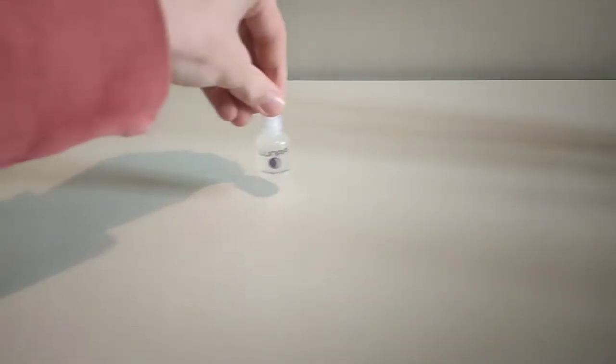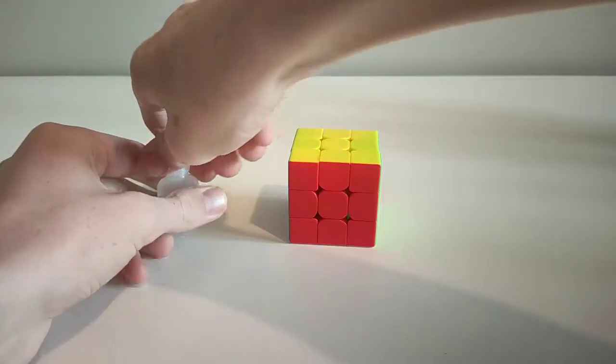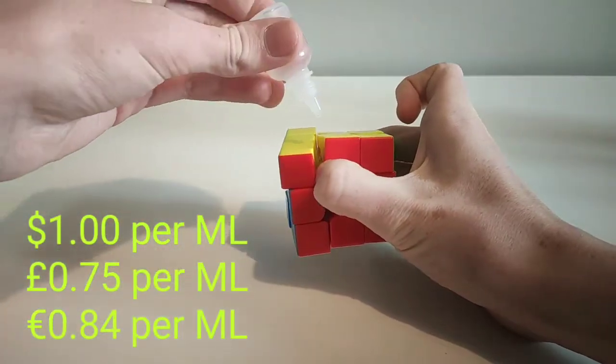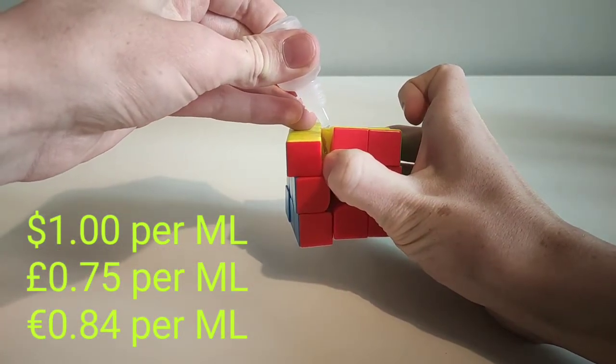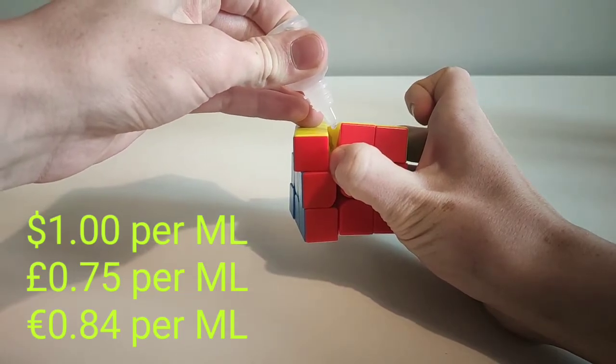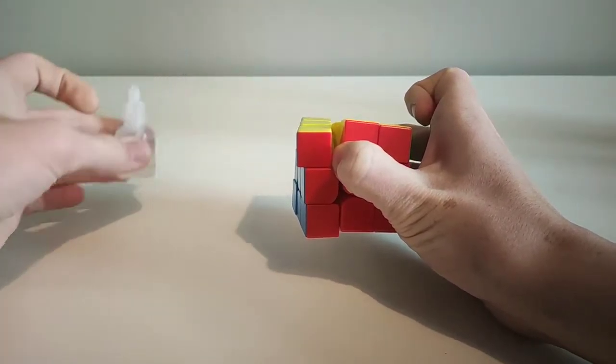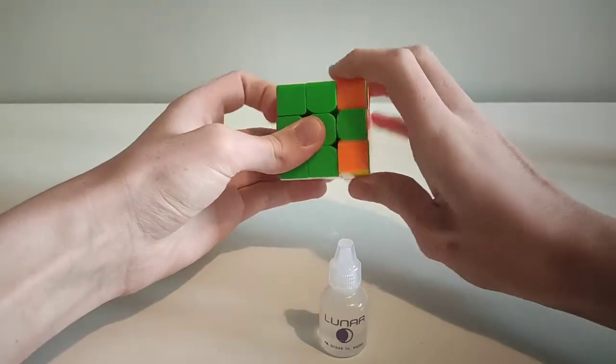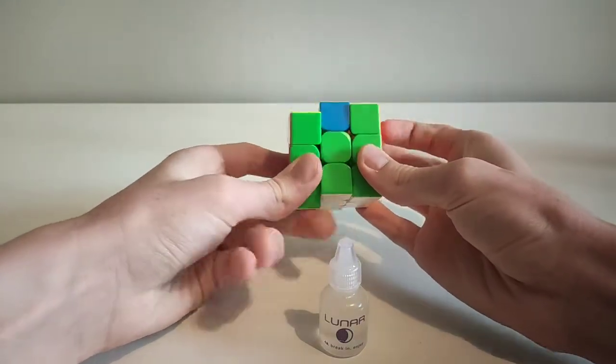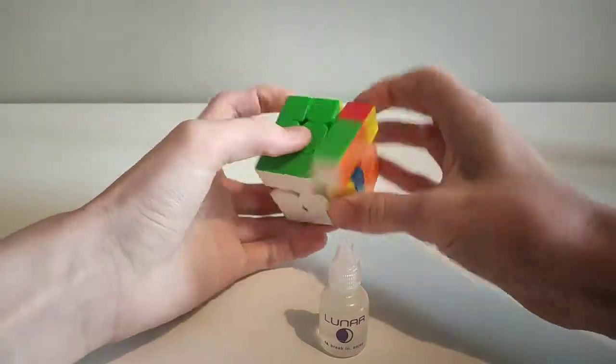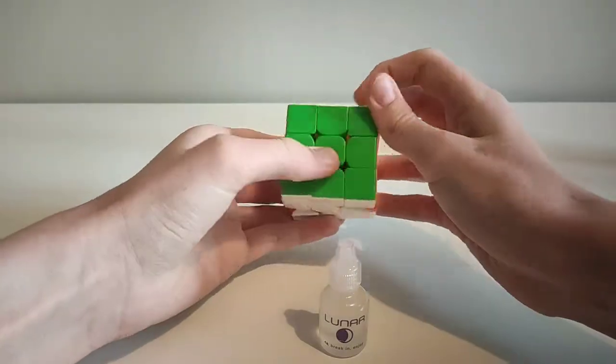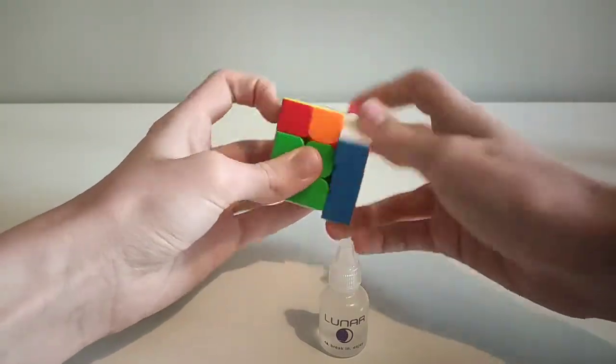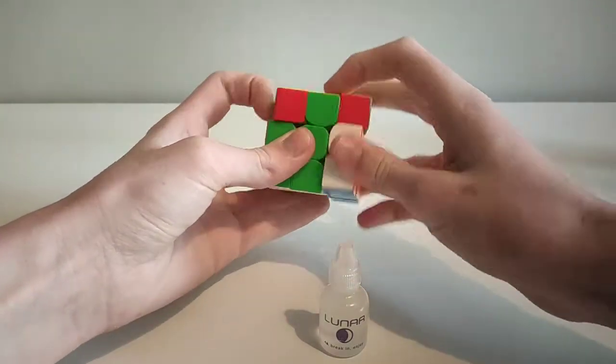Next up we have speedcube shop luna. Speedcube shop luna makes the cube a lot faster. Not as fast as the water-based lubes compound V and dnm37, but still very fast. It lasts a bit longer than those lubes though, as it is silicon-based instead of water-based.